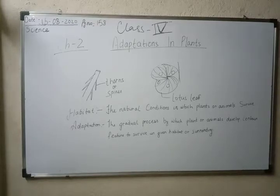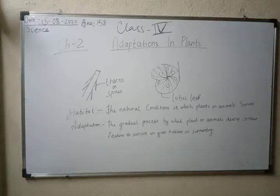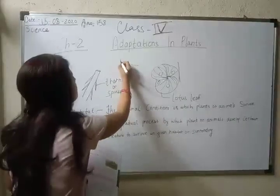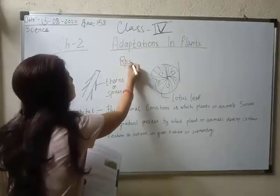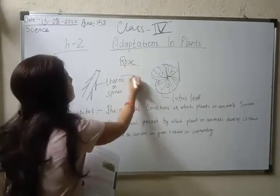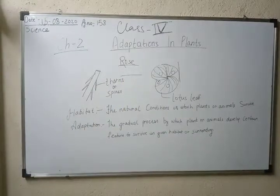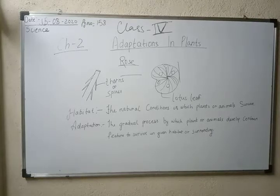The most common example is the rose plant. You can fill in the blank with 'rose plant.' We can formally see that the rose plant has thorns on it. So why are these thorns there?